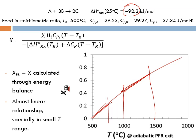How can the relationship between X and T be linear when the equation itself is not linear — there is a T in the numerator and a T in the denominator? That is because one of those terms is small compared to the other. If that term is small, it can be neglected, leaving only an approximately linear dependency.